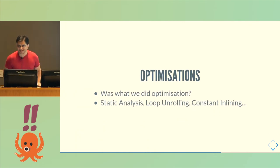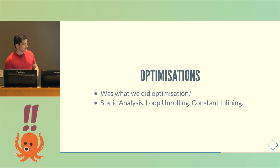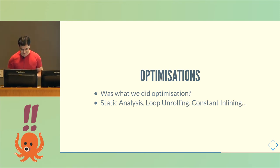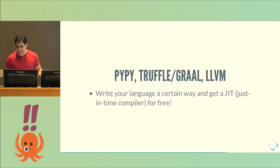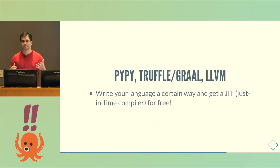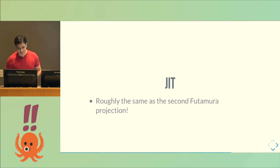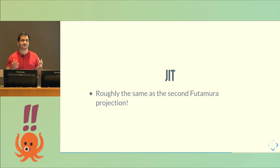I've been avoiding the word 'optimization,' but what we've been doing is optimization — you statically analyze a program and do loop unrolling, constant inlining. This is a good entry point into learning about those things. In the present day, we have things like PyPy, Truffle, Graal, and LLVM, whose entire value proposition is that if you write your language a certain way, you get a just-in-time compiler for free. A JIT compiler is essentially the second Futamura projection — it lazily, partially evaluates parts of your program and turns things that were previously interpreted into things that are now compiled.